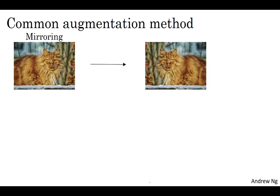Perhaps the simplest data augmentation method is mirroring on the vertical axis, where if you have this example in your training set, you flip it horizontally to get that image on the right. For most computer vision tasks, if the left picture is a cat, then mirroring it is still a cat. If the mirroring operation preserves whatever you're trying to recognize in the picture, this would be a good data augmentation technique to use.